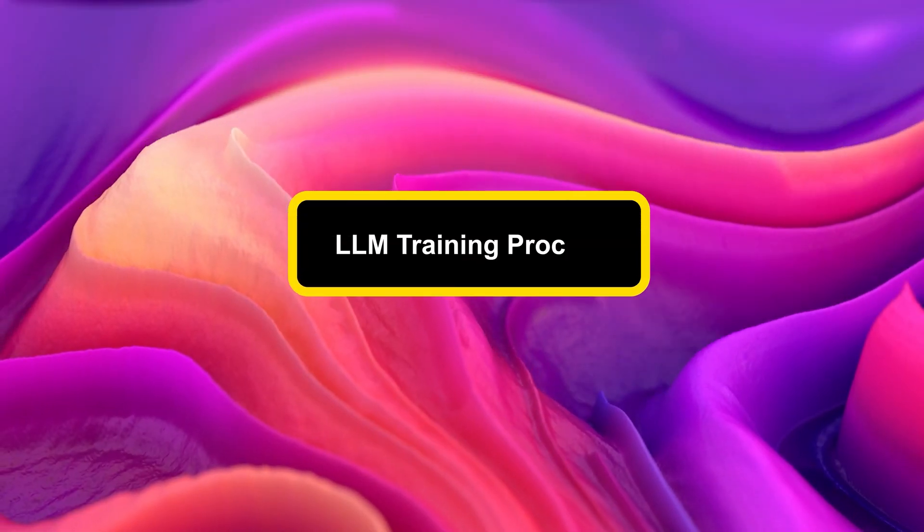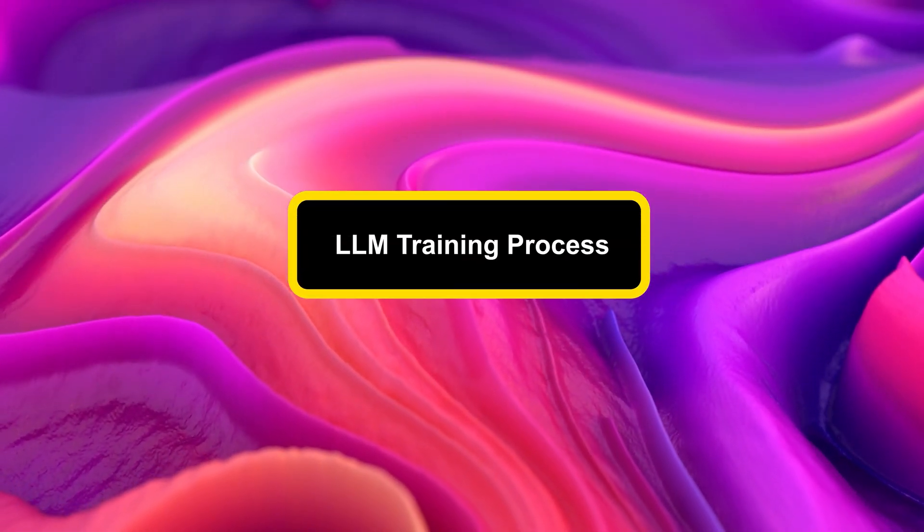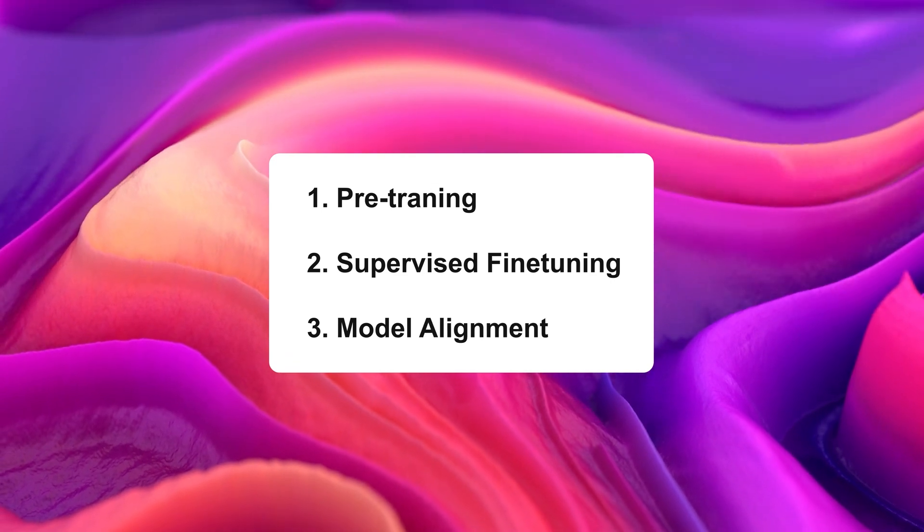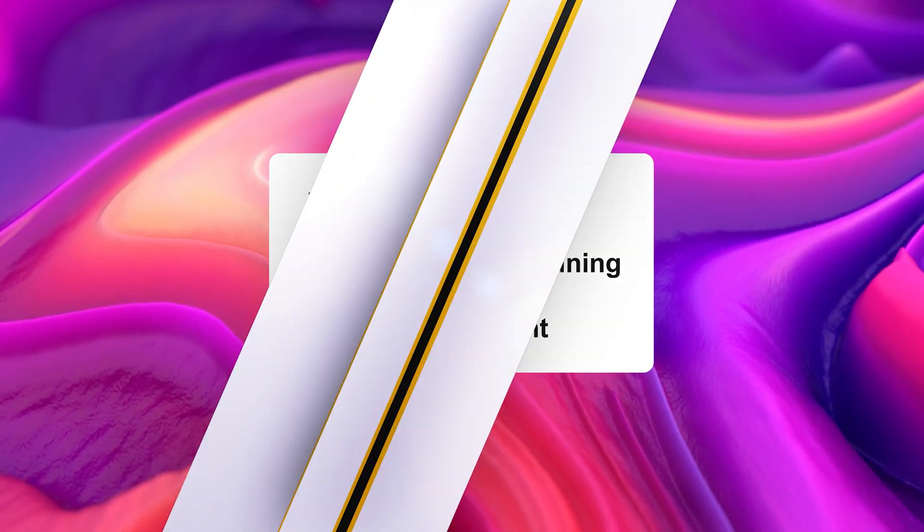To understand why there are three models in the Nemotron 4 family, let me first walk you through the process of how large language models like GPT-4, Claude 3.5, and Gemini 1.5 Pro are trained. A conversational large language model training requires three steps: pre-training, supervised fine-tuning, and model alignment.